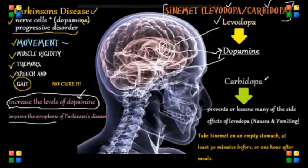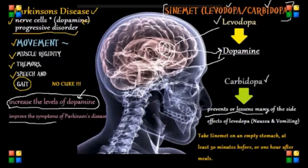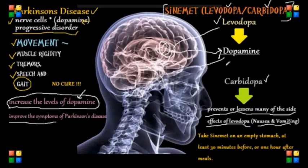Carbidopa increases the effectiveness of levodopa and prevents or lessens many of its side effects such as nausea, vomiting, and occasional heart rhythm disturbances. Carbidopa prevents levodopa from being broken down before it reaches the brain, which allows for a lower dose of levodopa and causes fewer side effects like nausea and vomiting.